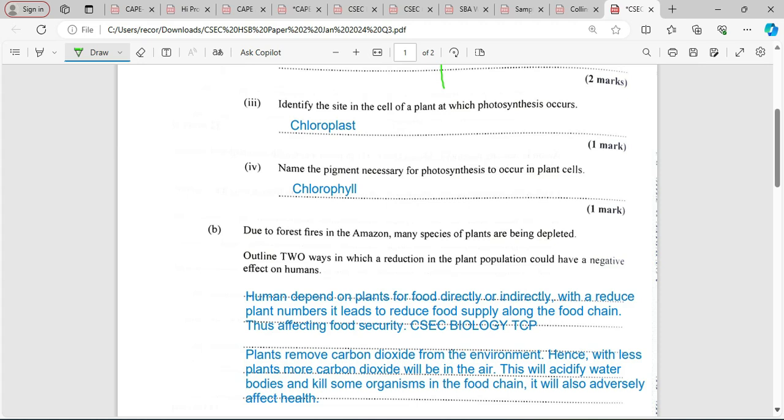First, we're looking at the food supply. Bearing in mind that we're part of a food web, humans depend on plants for food directly or indirectly. With a reduced number of plants, this leads to reduced food supply.